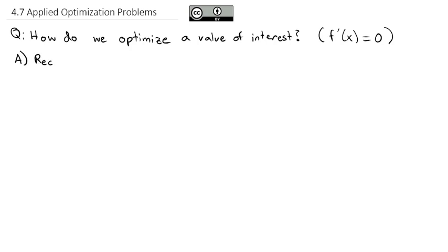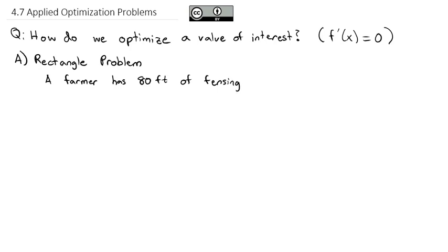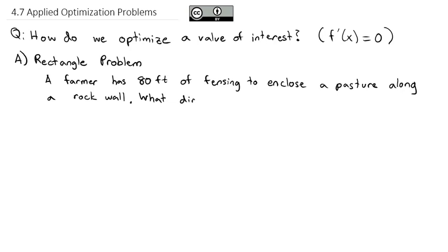The first classic problem is the rectangle problem, where we're generally trying to either minimize the perimeter or maximize the area. So let's say a farmer has 80 feet of fencing to enclose a pasture along a rock wall. That means he only has to fence three sides of the enclosure, not all four. What dimensions would maximize the area?